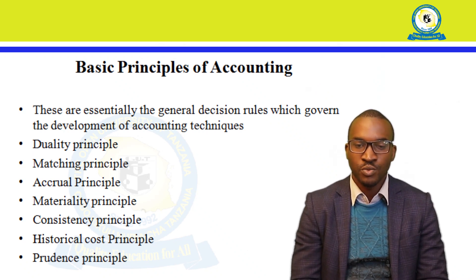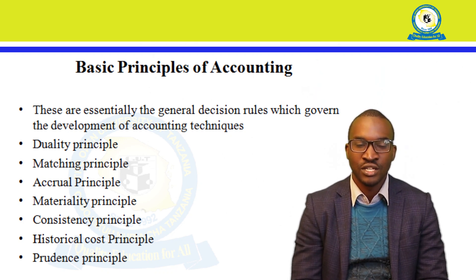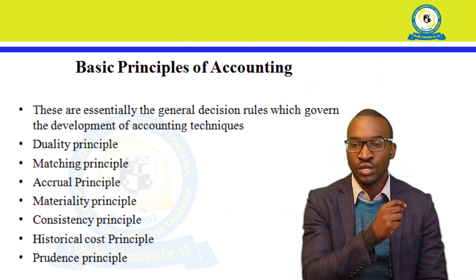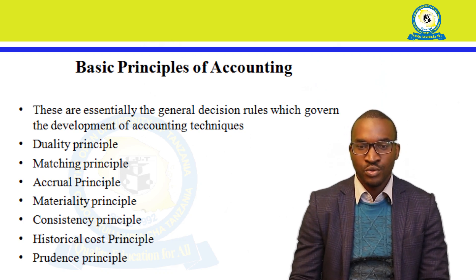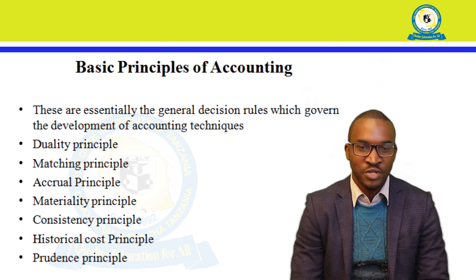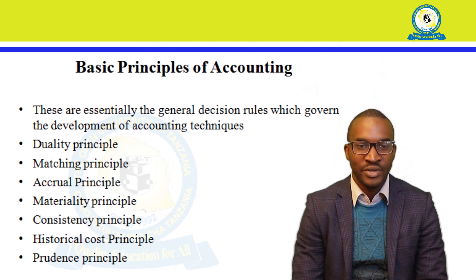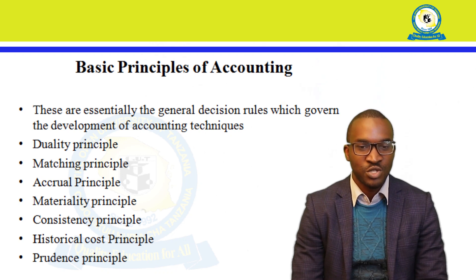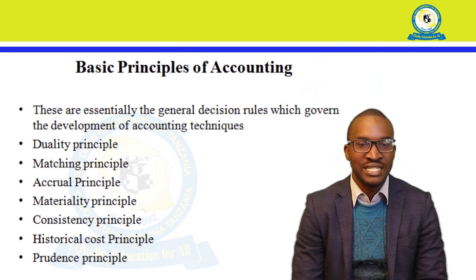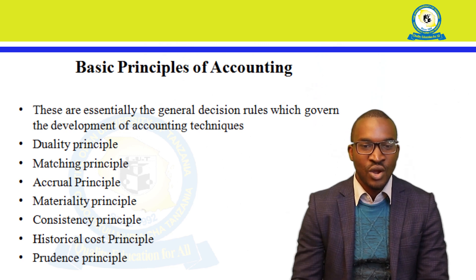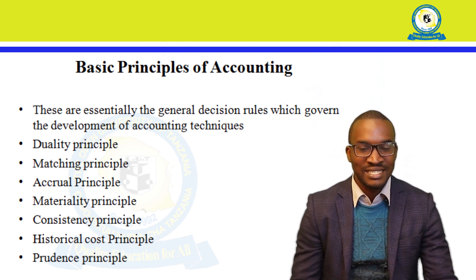The historical cost principle calls for recording transactions at their historical cost — the original cost of that transaction. The prudence principle is an accounting principle that requires recording expenses and liabilities as soon as possible, but revenues are recorded only when they are realized or assured. This is also called the conservatism principle.